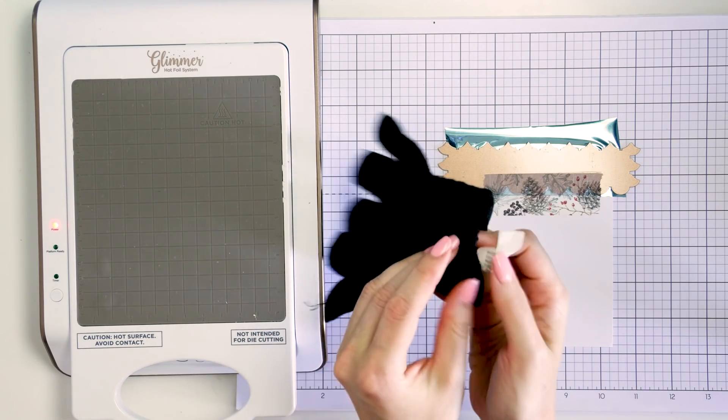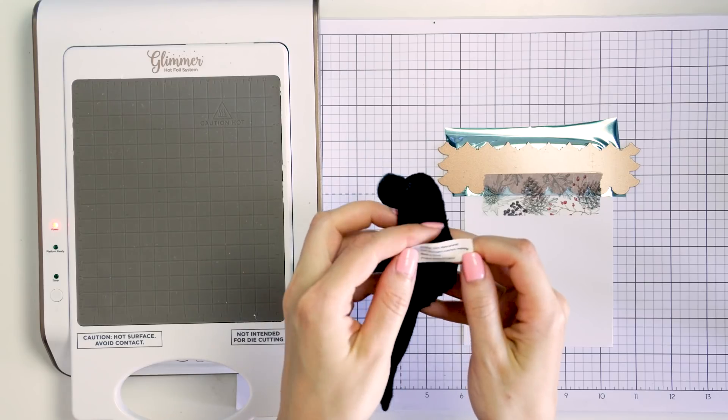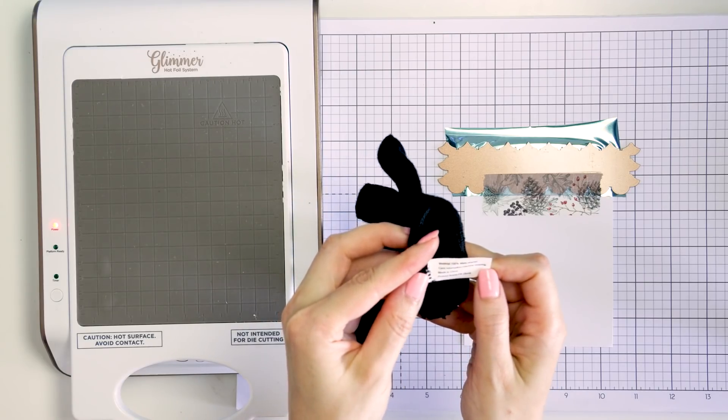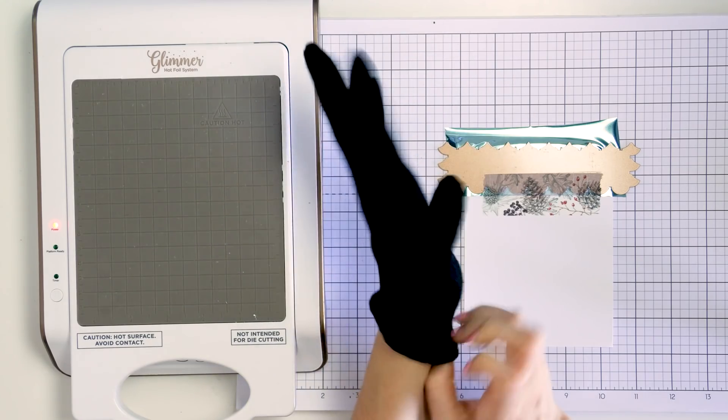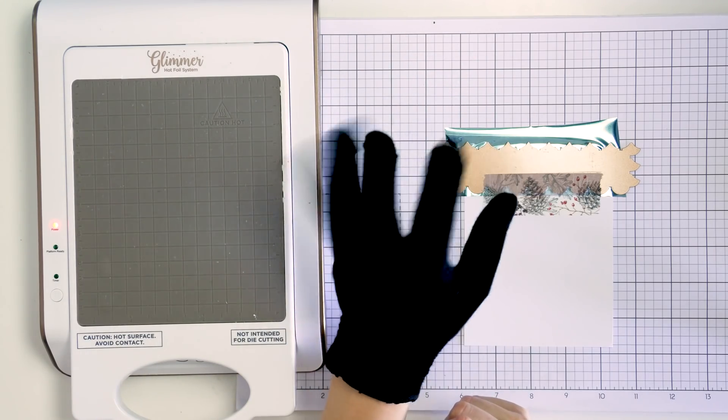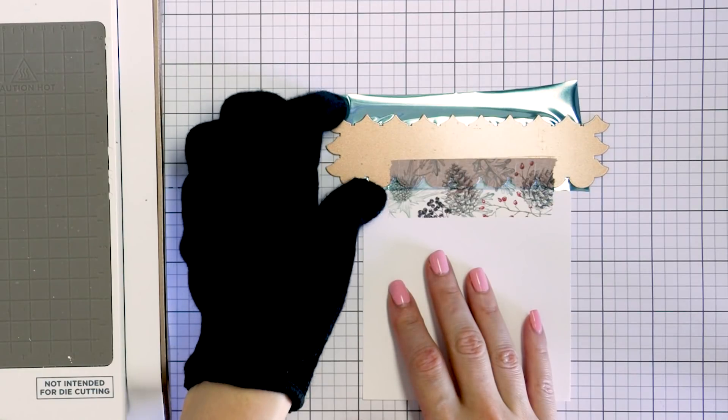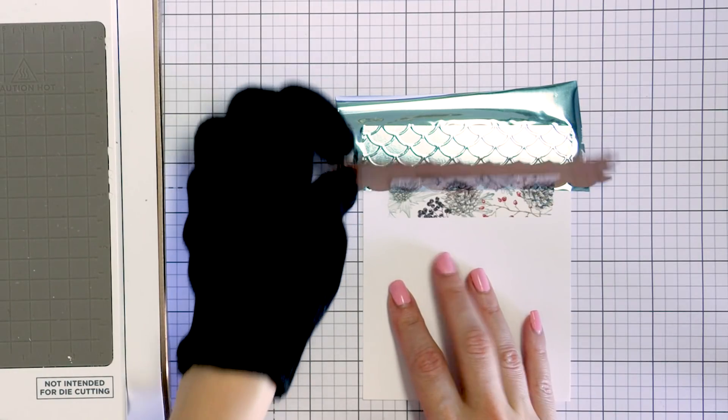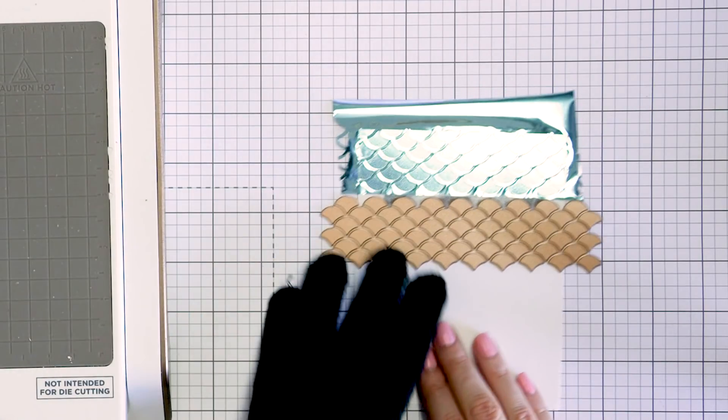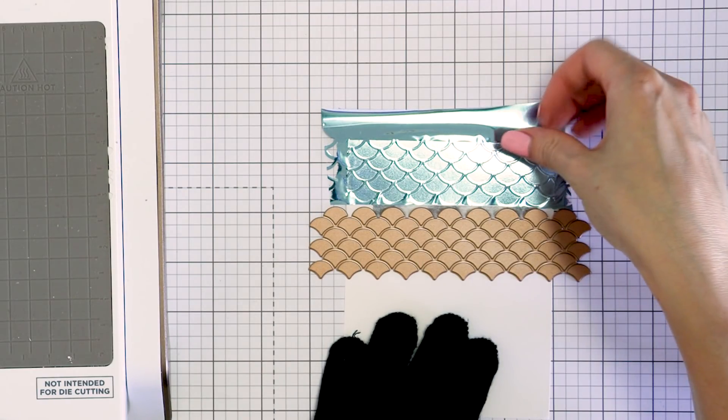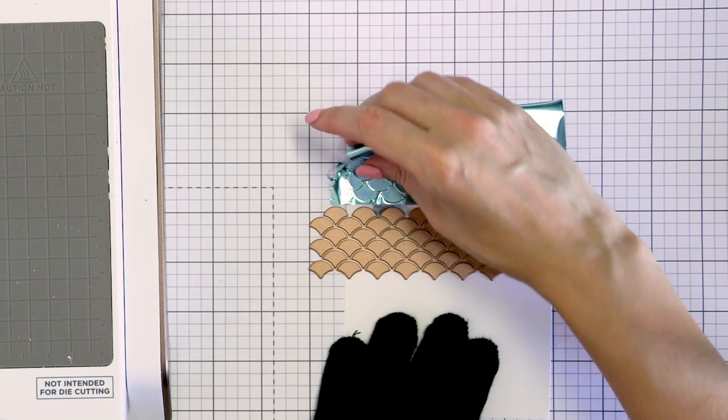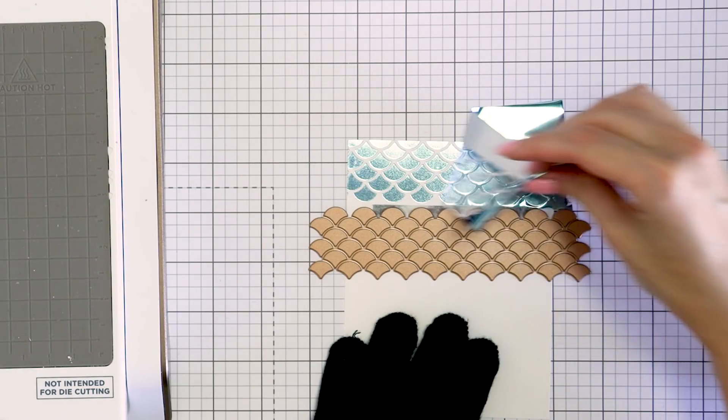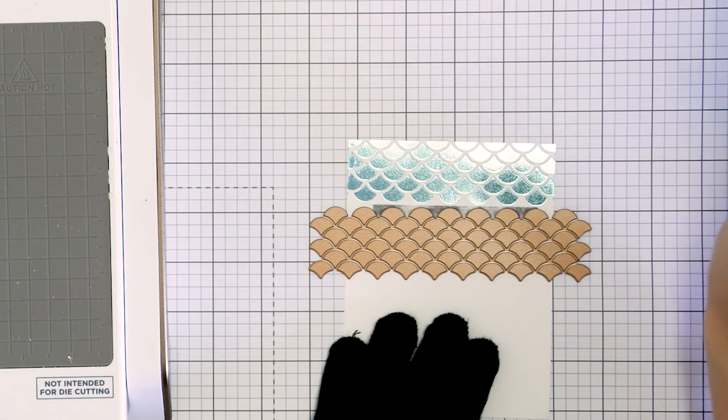I have one of those curling irons that doesn't have a clamp and so there's a glove included with the iron to be able to wrap the hair strand around the curling wand and hold it in place while it curls it. The glove protects the hand from the heat. I can use it when doing hot foiling to handle the hot glimmer plate and also protect my hand from all of that heat. I'm a lefty so putting it on my left hand and I am ready to roll.